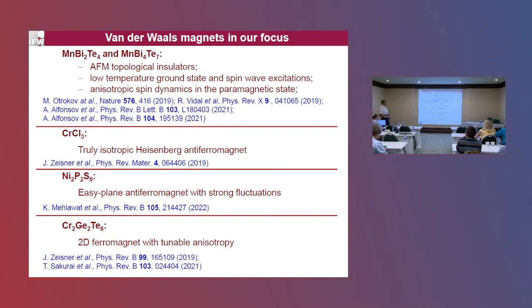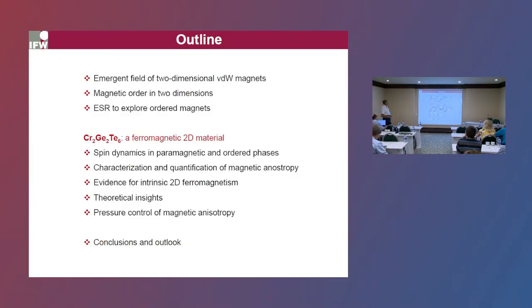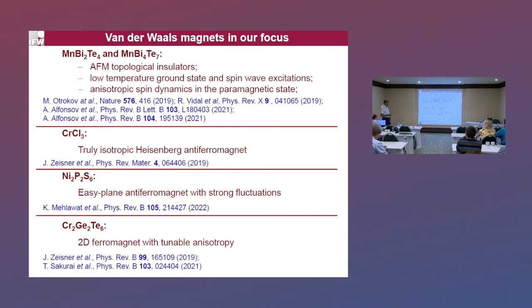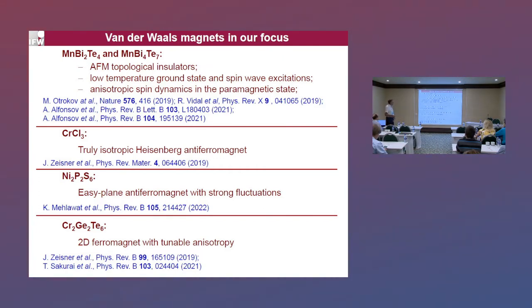There are also other compounds which are of great interest, showing different kinds of magnetic order. We provide some evidence that the well-known material chromium chloride is a truly isotropic Heisenberg anti-ferromagnet, which is quite an exceptional case. On the other hand, nickel phosphosulfate is an easy-plane anti-ferromagnet with strong fluctuations.